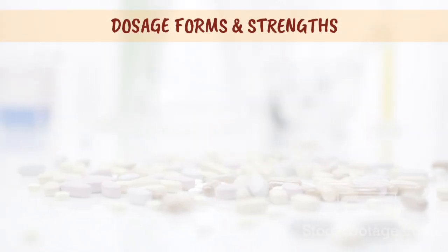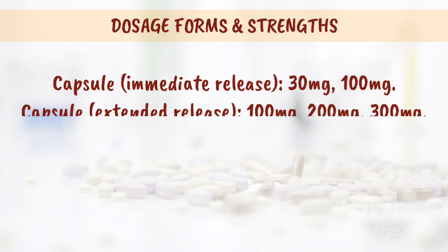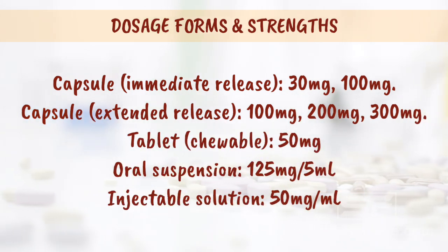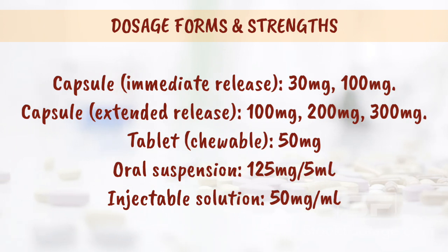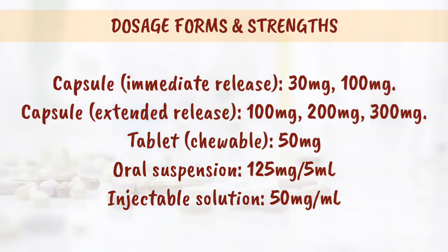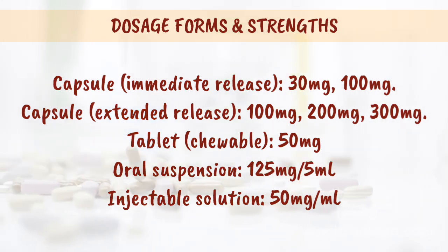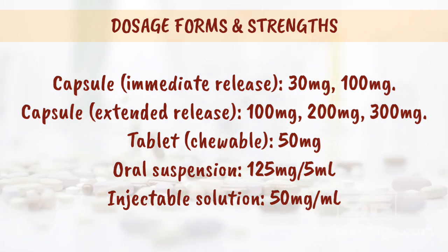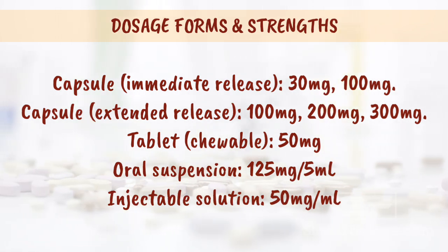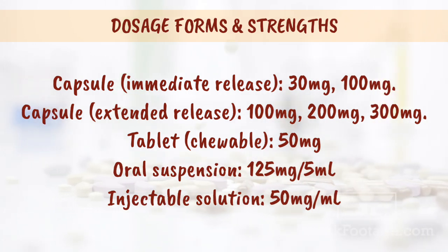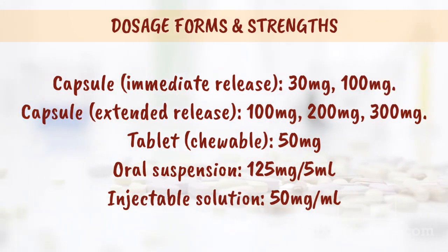Dosage forms and strengths: Capsule immediate release — 30 mg, 100 mg. Capsule extended release — 100 mg, 200 mg, 300 mg. Tablet chewable — 50 mg. Oral suspension — 125 mg per 5 ml. Injectable solution — 50 mg per ml.